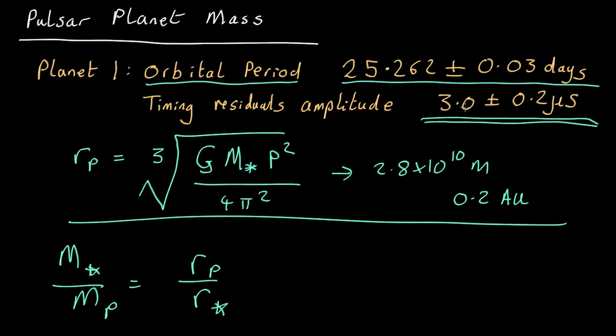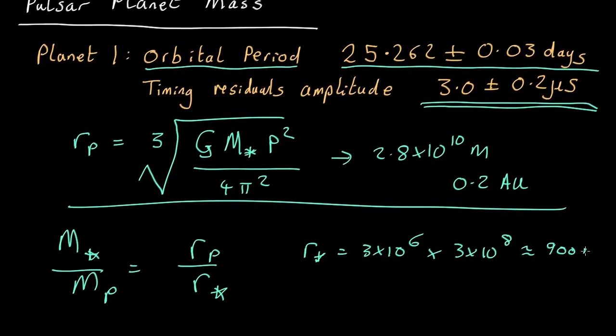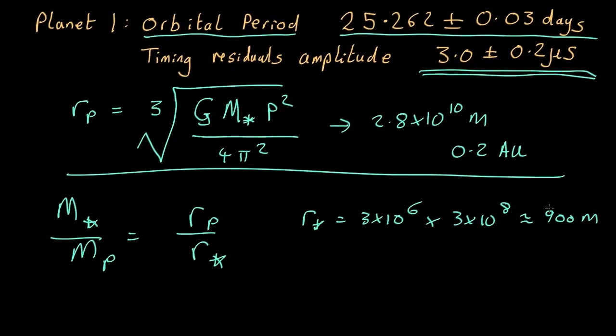If the star timing varies by 3 microseconds, we're going to assume the orbit is edge-on here. That means that the radius is the distance light travels in 3 microseconds. So r star is 3 by 10 to the minus 6, so time times the speed of light, which is 3 by 10 to the 8 meters per second, which comes out as about 900 meters. So the reflex motion of the star backwards and forwards is a radius of about 900 meters.